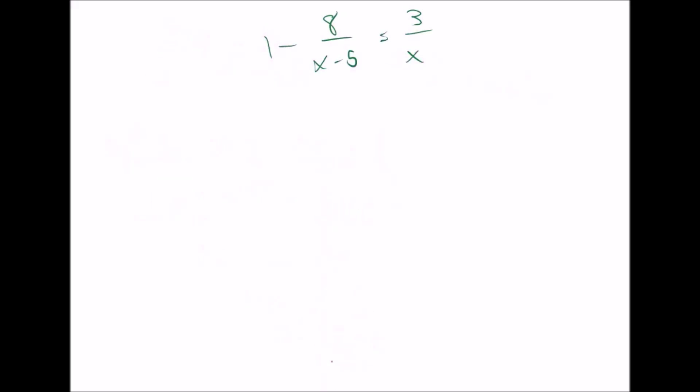This one is definitely a little bit trickier. You can't just cross multiply because there are three terms. There's one term with this 1, there's another one with 8 over x minus 5, there's a third term with 3 over x. So you can't just cross multiply.